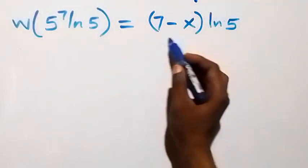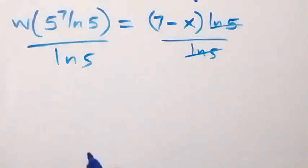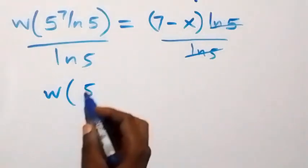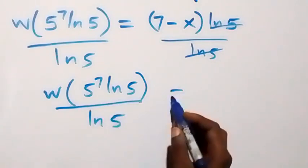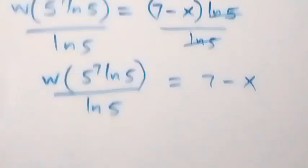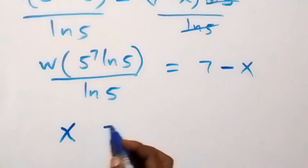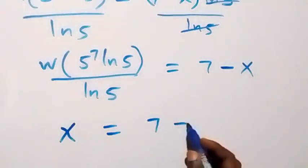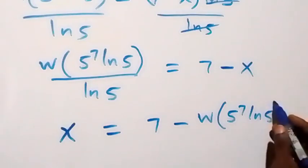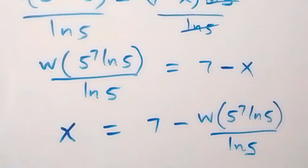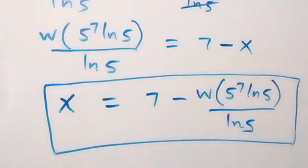We divide both sides by ln 5. The left side divided by ln 5 gives W(5^7 · ln 5) divided by ln 5. This equals 7 minus x. Rearranging to solve for x, we bring minus x to one side and everything else to the other: x equals 7 minus W(5^7 · ln 5) divided by ln 5. This is the solution, and we can also compute it as a decimal using a calculator.